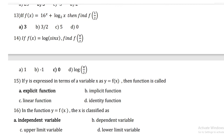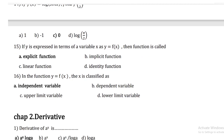If y is expressed in terms of a variable x as y = f(x), then the function is called an explicit function. In the function y = f(x), x is classified as the independent variable.